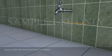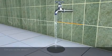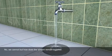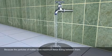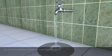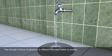Activity two, open a water tap and try to break the stream. Can you cut the stream? No, we cannot. But how does the stream remain together? Because the particles have maximum force acting between them. So, the force keeps the stream to remain together. The strength of force of attraction is different from one matter to another.